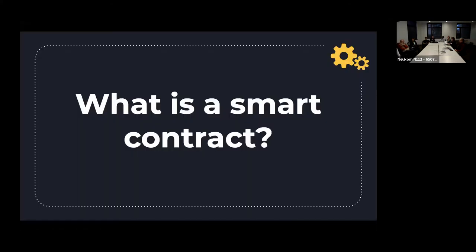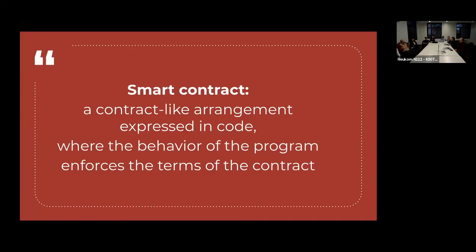So what is a smart contract? We have a different perspective than you might have heard. We define a smart contract as a contract-like arrangement expressed in code, where the behavior of the program enforces the terms of the contract. By smart contract, we don't merely mean code that runs on a blockchain — we actually mean something more than that. And by smart contract, we don't mean a legal contract necessarily. We think that's a separate definition.